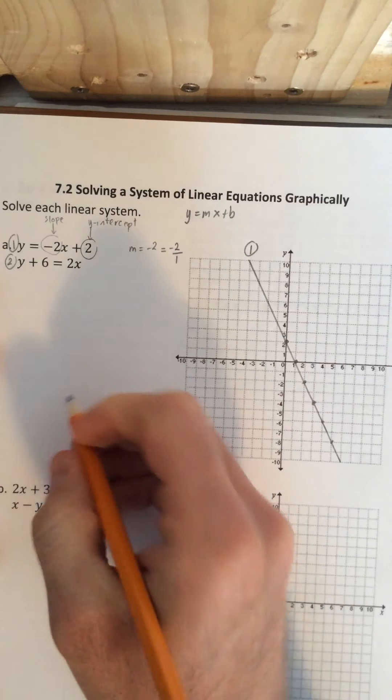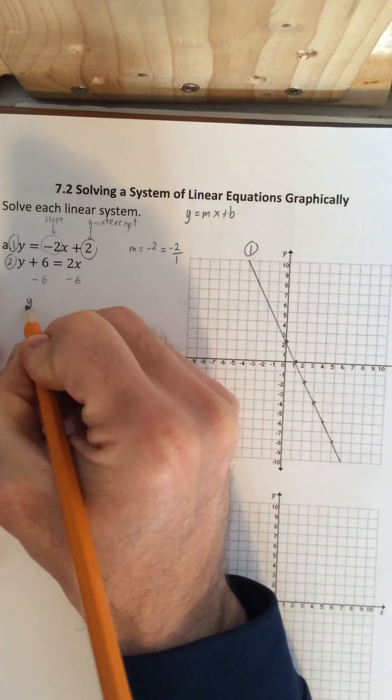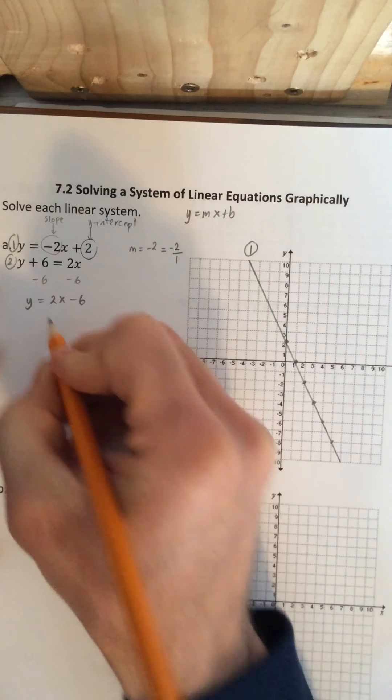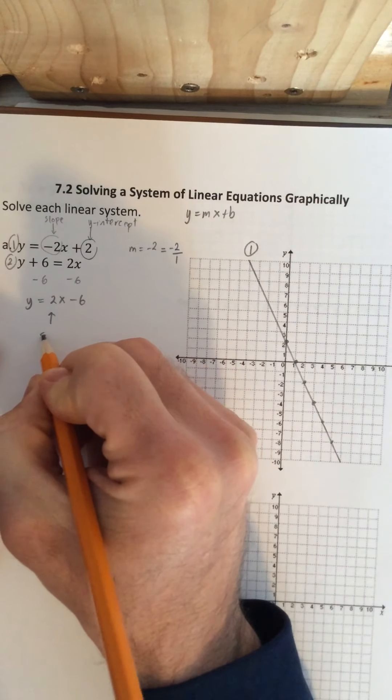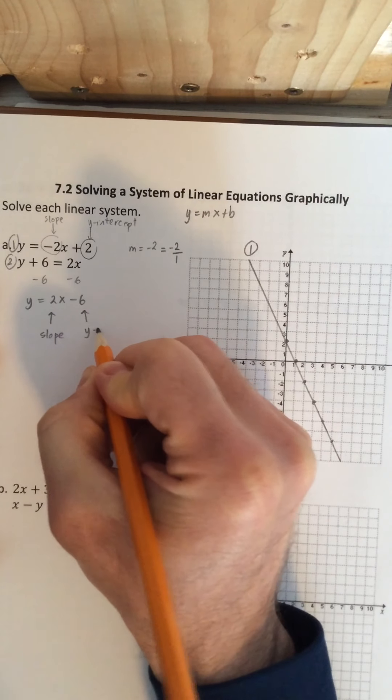Equation 2 is this, y plus 6 equals 2x. Now if I subtract 6 from both sides, this will isolate y, which will put this equation in slope intercept form. Again, in this equation, the slope is 2 and the y-intercept is negative 6.